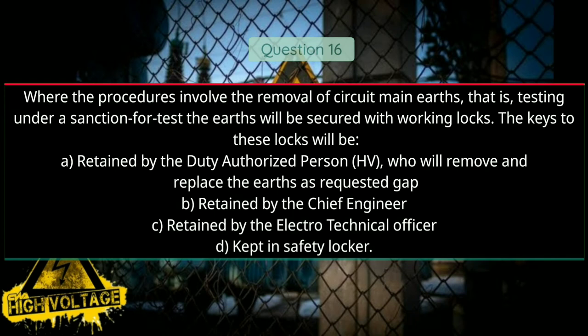Question number sixteen: Where the procedures involve the removal of circuit main earths, i.e. testing under a sanction for test, the earths will be secured with working locks. The keys to these locks will be — Option A: retained by the duty authorized person who will remove and replace the earths as requested, Option B: retained by the chief engineer, Option C: retained by the electrical technical officer, Option D: kept in safety locker. Answer will be A, retained by the duty authorized person.